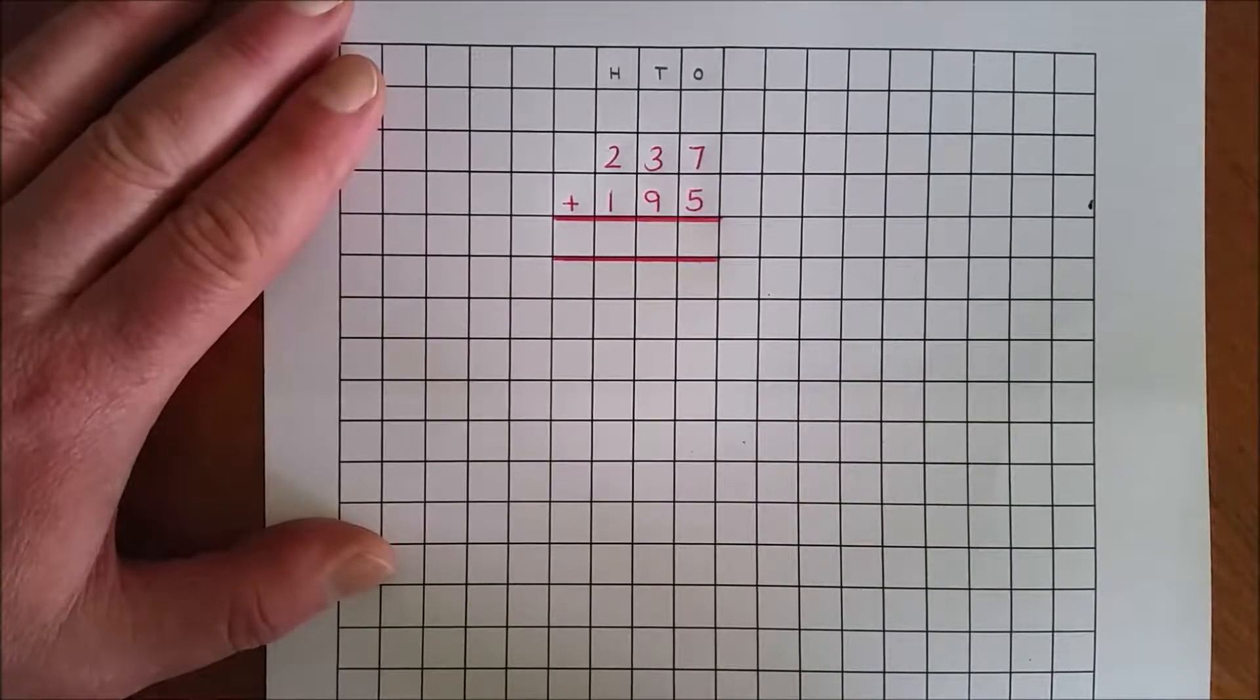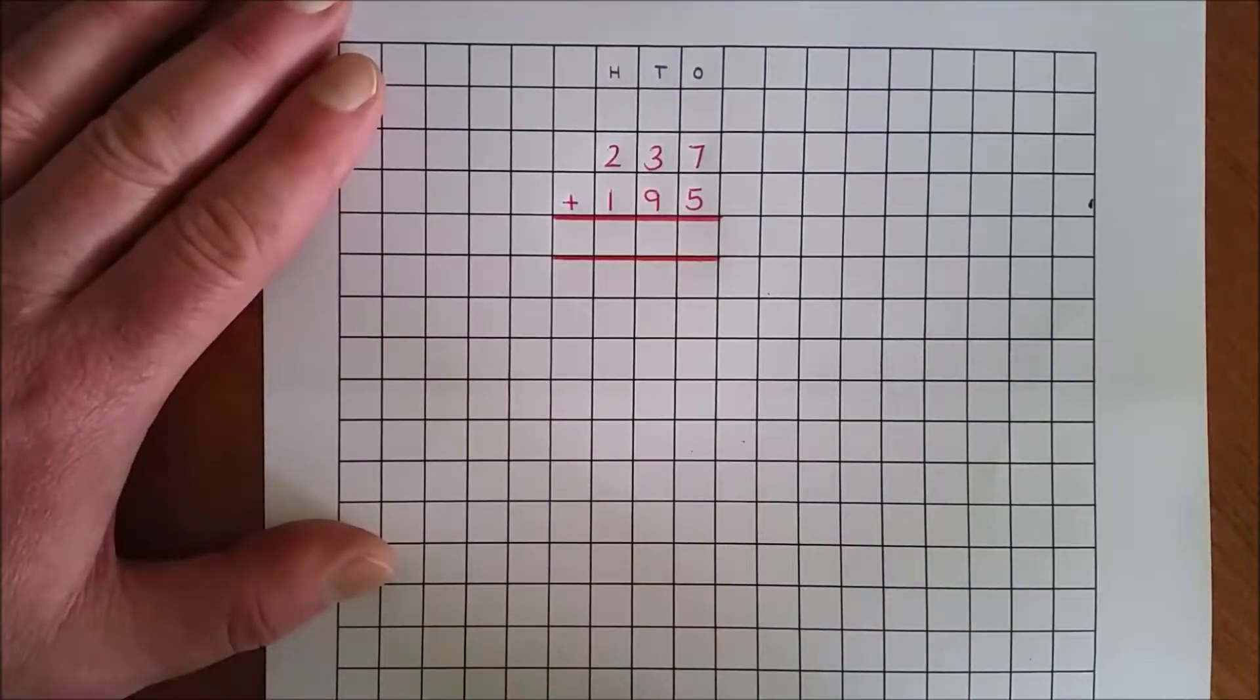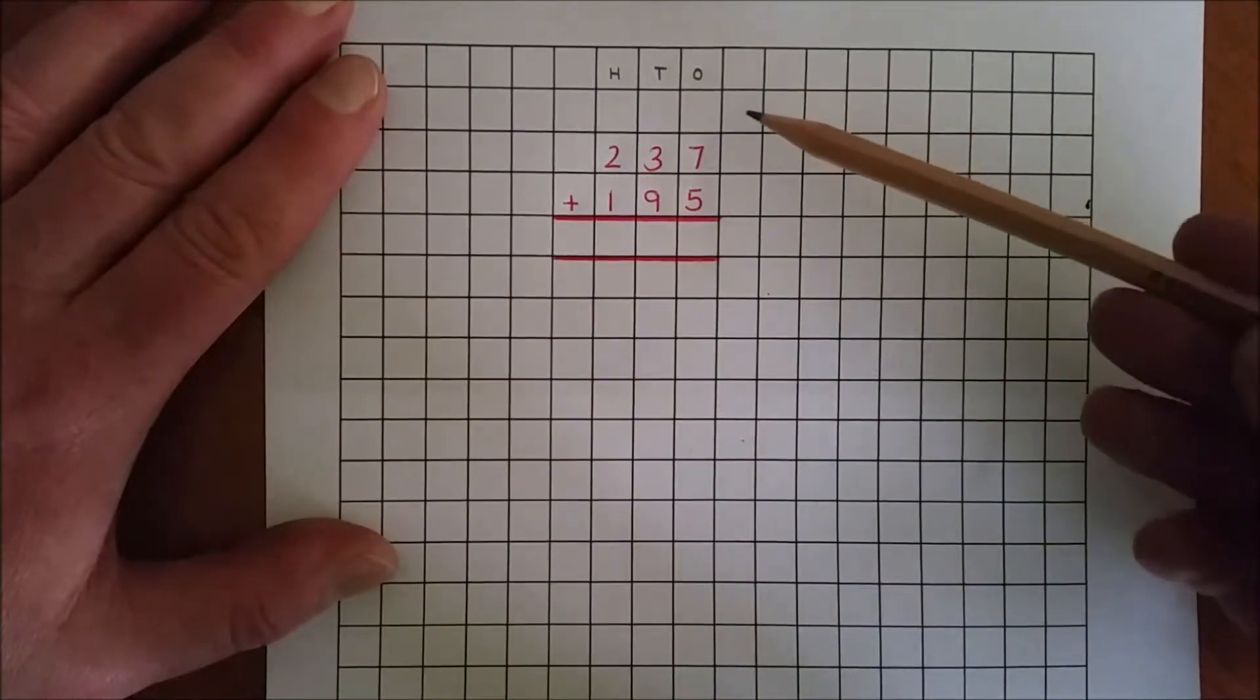I'm going to solve 237 and 195. When completing the traditional method for addition, we always begin with the lowest place value. In this case, it's the ones.